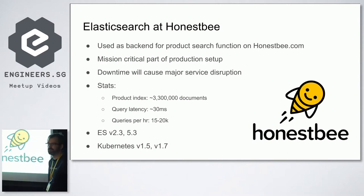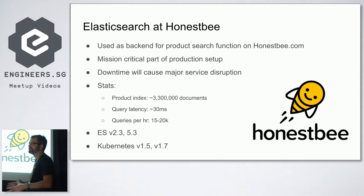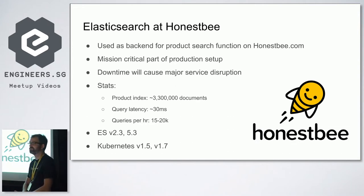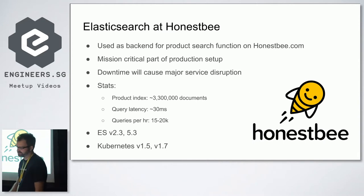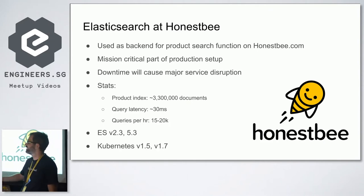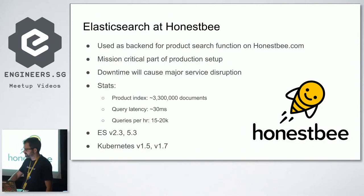We're also running 5.3 for some other services on the microservice side. Our Kubernetes clusters are versions 1.5 and 1.7 — production is still 1.5, being upgraded to 1.7; staging is already 1.7. Most of what I'm saying applies to all these versions, so it's pretty universal.